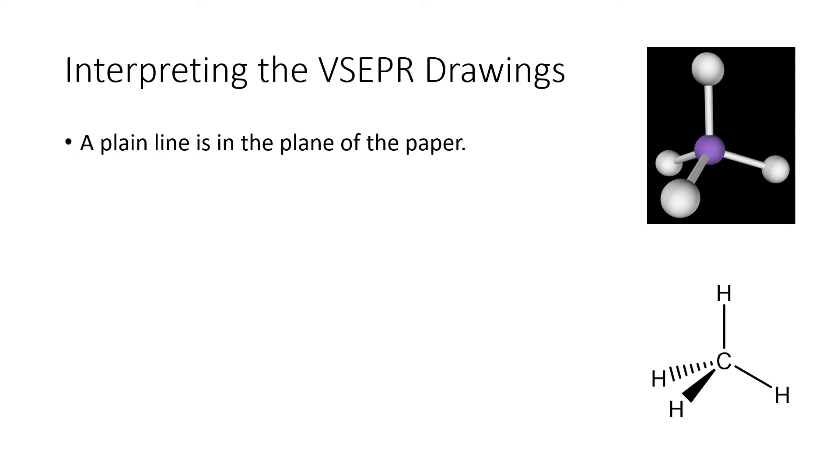In this example we have that central carbon atom. We're going to take three points to define the plane, so we're going to take the top hydrogen and the right hand hydrogen and say that these two bonds put these three atoms in the plane of the paper.